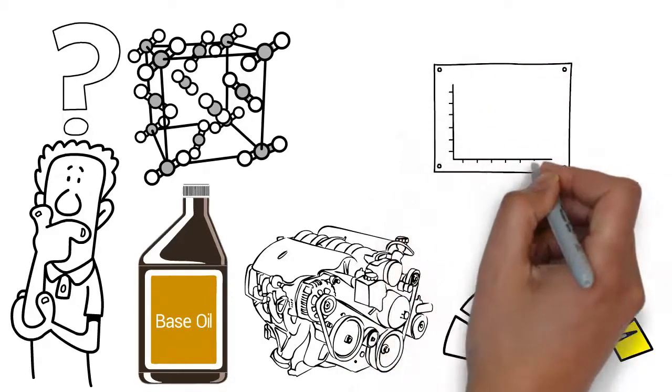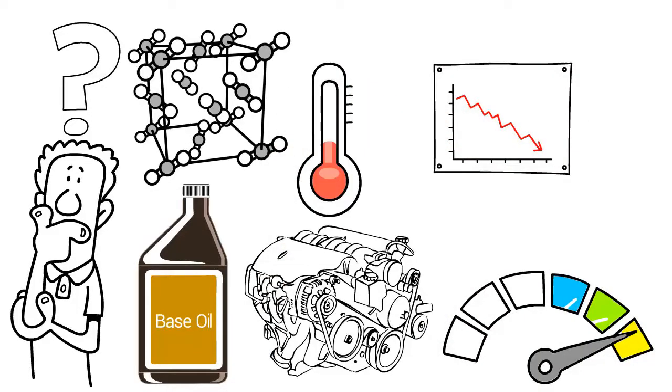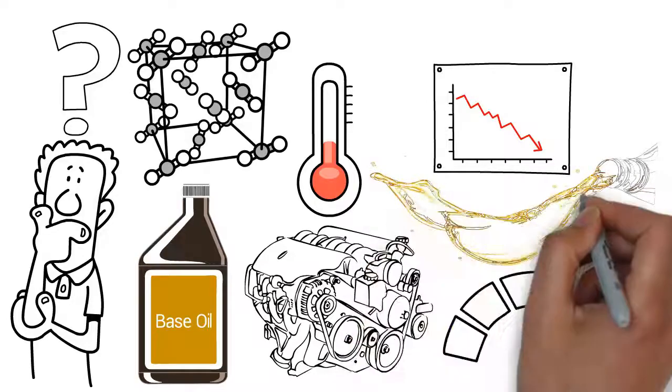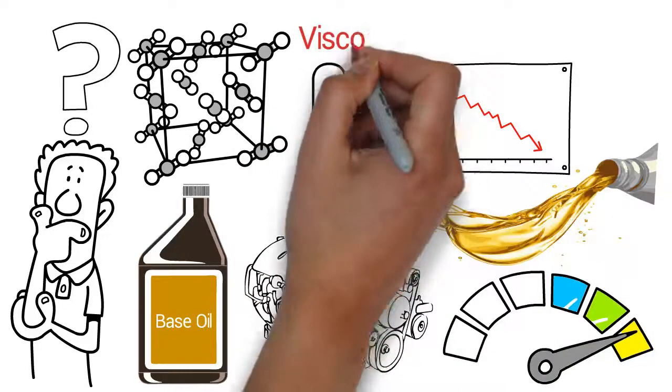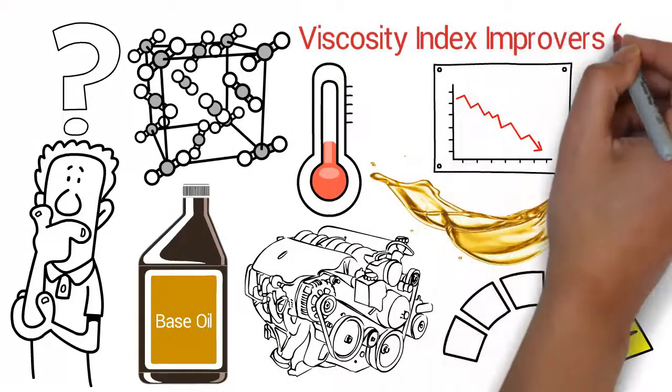Viscosity modifiers, VM, are used to reduce the influence of temperature on the viscosity of lubricants, also known as viscosity index improvers, VII.